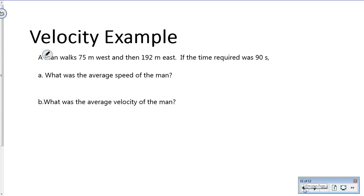We'll compare average speed and average velocity. A man walks 75 meters west then 192 meters east. If the time required was 90 seconds, what was the average speed? With average speed, direction doesn't matter. Distance equals 75 plus 192, which is 267 meters.